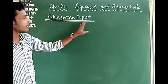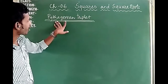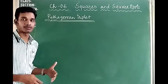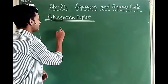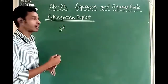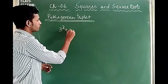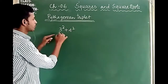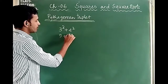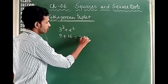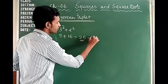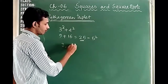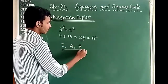The next topic is the Pythagorean triplet, which is related to the Pythagorean theorem. For example, 3 squared plus 4 squared equals 9 plus 16 equals 25, which is 5 squared. So 3, 4, and 5 are a Pythagorean triplet.